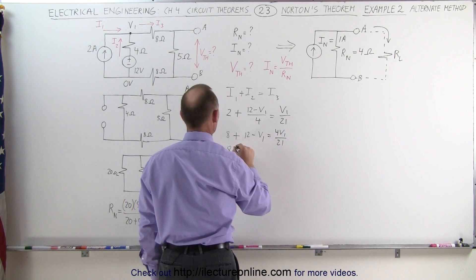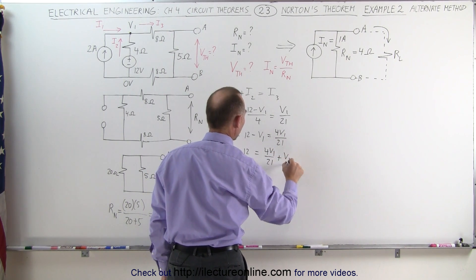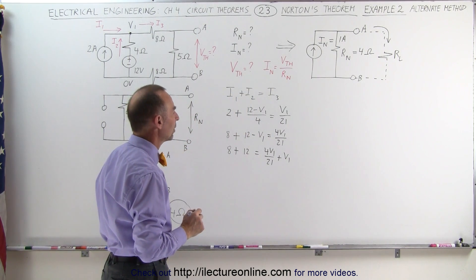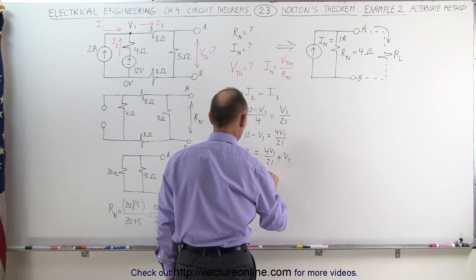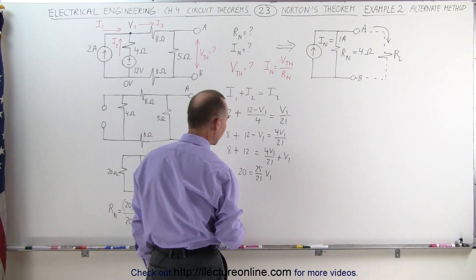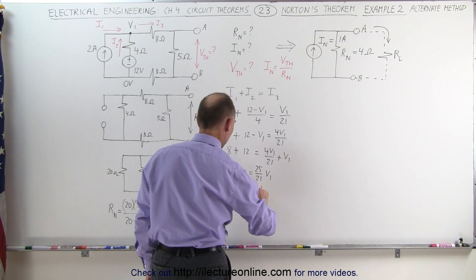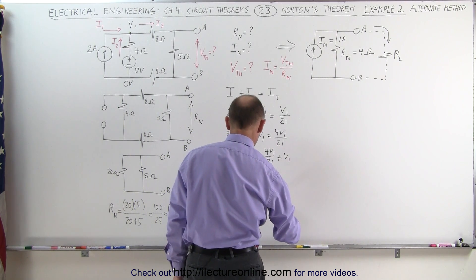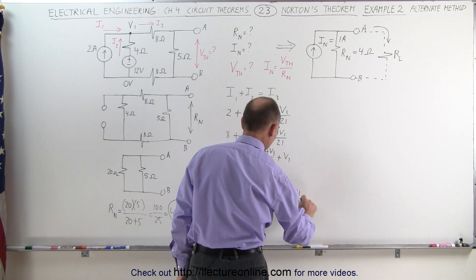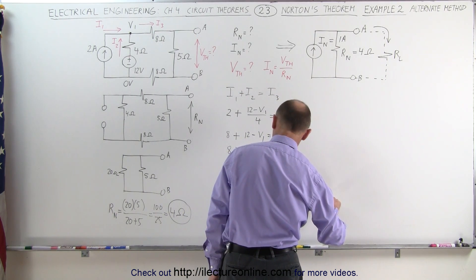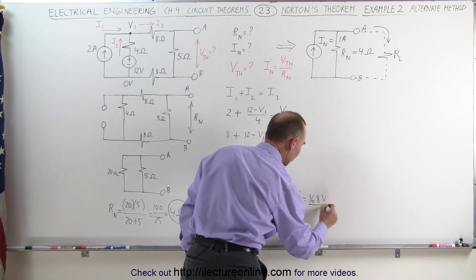Moving V1 across to the other side, we get 8 plus 12, which is 20, equal to 4V1 divided by 21 plus V1. Combining terms, that gives us 20 equals (21 plus 4) over 21 times V1, which is 25 over 21 times V1. Solving for V1, we get V1 equals 20 times 21 divided by 25, which is 4/5 times 21, equal to 84 divided by 5, which is 16.8 volts.